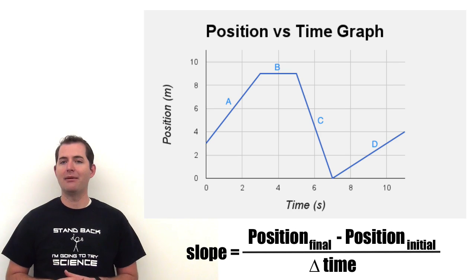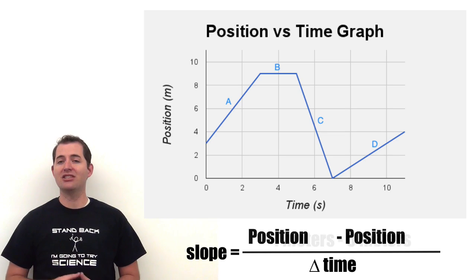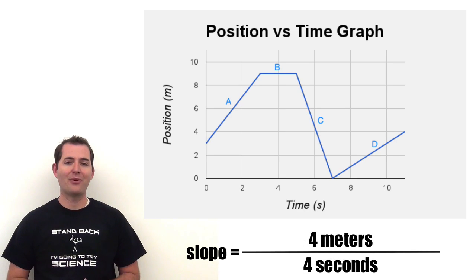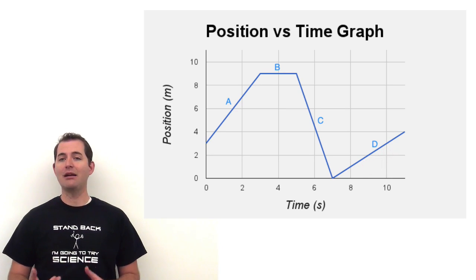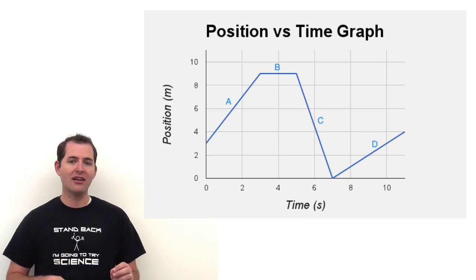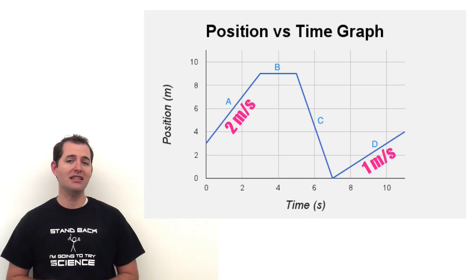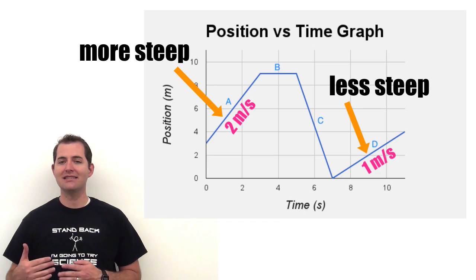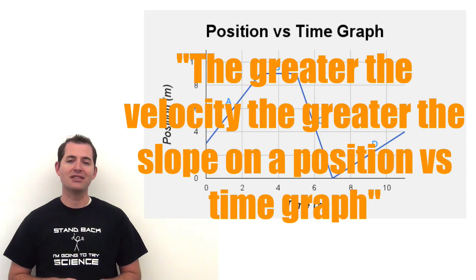Let's determine the slope of section D. Using the same steps — final position minus initial position divided by change in time — we get four meters minus zero meters divided by four seconds, which equals one meter per second. This is a positive slope, meaning the object is moving away from the origin, the same direction as in section A. Comparing sections A and D: section A had a slope of two meters per second and section D has one meter per second. On the graph, section D is less steep than section A. The greater the velocity, the greater the slope on a position versus time graph.